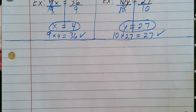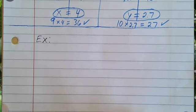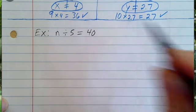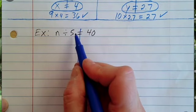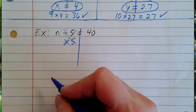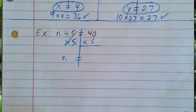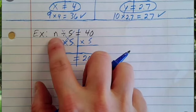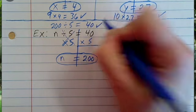What if you see a division sign? You solve by multiplying. For example: n divided by 5 equals 40. Draw a line down the equal sign. To get n by itself, how do I get rid of divide by 5? I multiply by 5. The inverse operation cancels out the 5, giving me n by itself. If I multiply by 5 on this side, I need to multiply by 5 on the other. 40 times 5 is 200, so n equals 200. Check: 200 divided by 5 equals 40. It works.